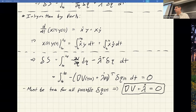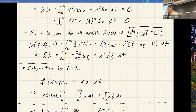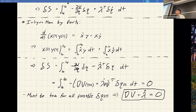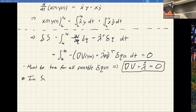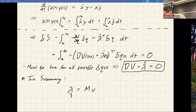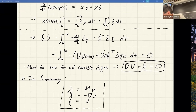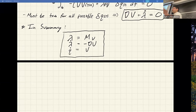Taking derivatives with respect to λ gives back the original constraint Q̇ = V. Putting it all together, we have three conditions: λ = MV, λ̇ = −∇V(Q), and Q̇ = V. This is Pontryagin's minimum principle for this particular optimal control problem — derived the classical continuous-time way with calculus of variations.